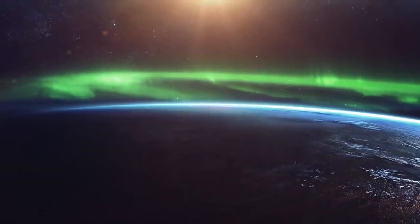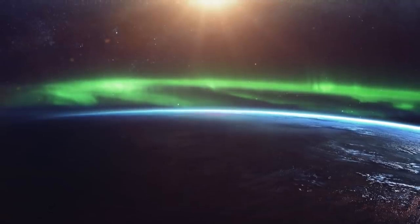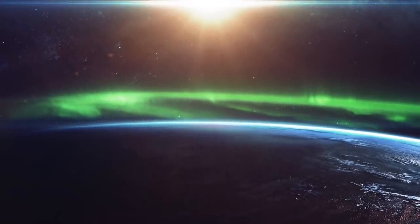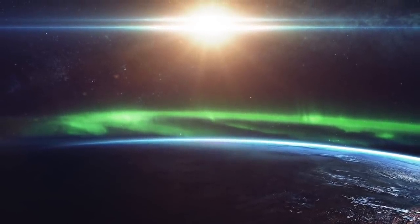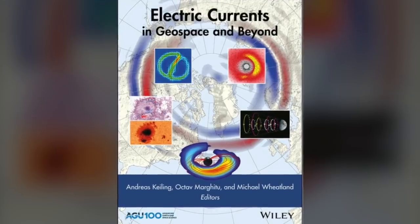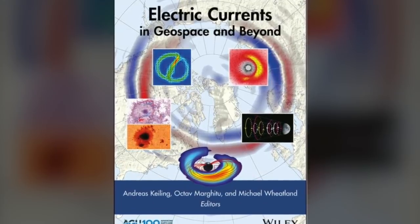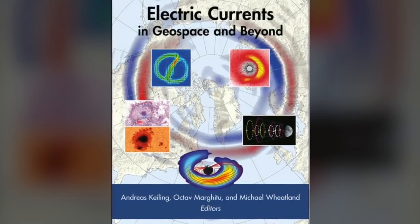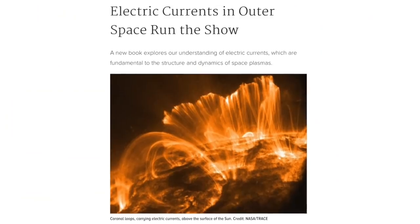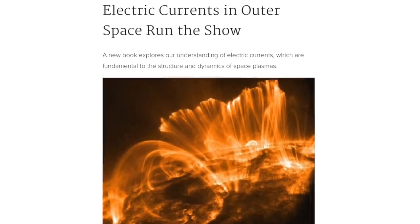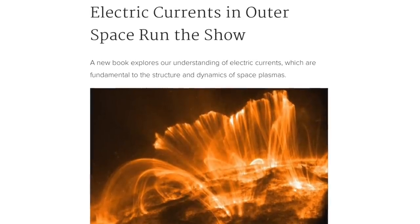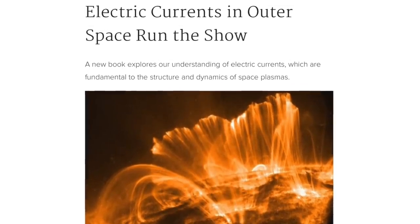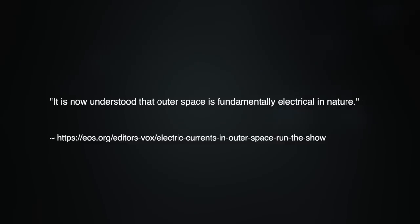However, we do see some glimmer of hope among scientists studying the local picture in our own solar system, who are willing to infer the electric currents required for the magnetic fields in the environment near Earth. The electric current systems near our planet are the subject of the 2018 book, Electric Currents in Geospace and Beyond. The American Geophysical Union's Earth and Space Science News published a summary of the book titled, Electric Currents in Outer Space Run the Show. The summary states bluntly, It is now understood that outer space is fundamentally electrical in nature.